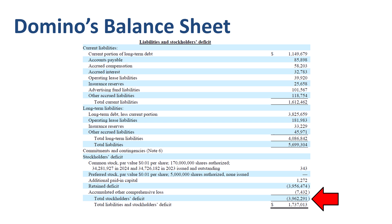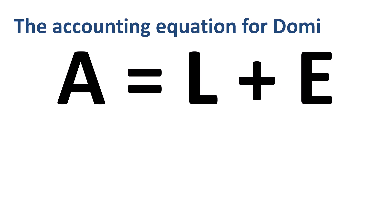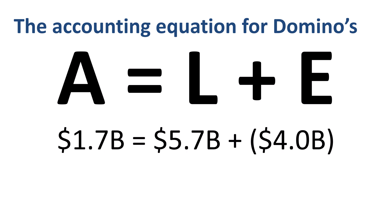Finance people have the habit of putting negative numbers between brackets rather than putting a minus sign in front of them. We are ready to fill in the accounting equation for Domino's Pizza: $1.7 billion equals $5.7 billion plus negative $4 billion. Adding a negative number is the same as subtracting a positive number. We collected the asset number, the liabilities number, and the equity number directly from the balance sheet.